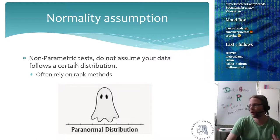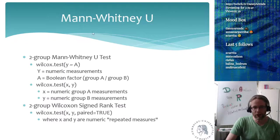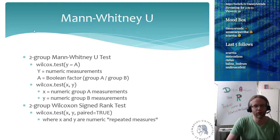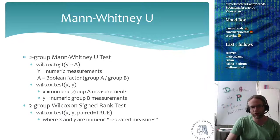Non-parametric tests assume nothing about the data distribution. However, the assumption of randomness is fundamental to both parametric and non-parametric tests — if you did not randomly sample, neither test will be valid. If you want to do a non-parametric test similar to the t-test, you can use the two-group Mann-Whitney U test. For some reason, the Mann-Whitney U is called wilcox.test in R.